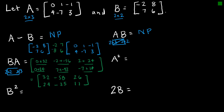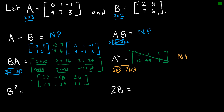Now let's look at A squared. Some people might try squaring each element individually — 0²=0, 1²=1, etc. — but that is absolutely not the case. What we actually do is A times A. Since A is a 2 by 3 and A is a 2 by 3, the inner dimensions don't match, so A squared is not possible.